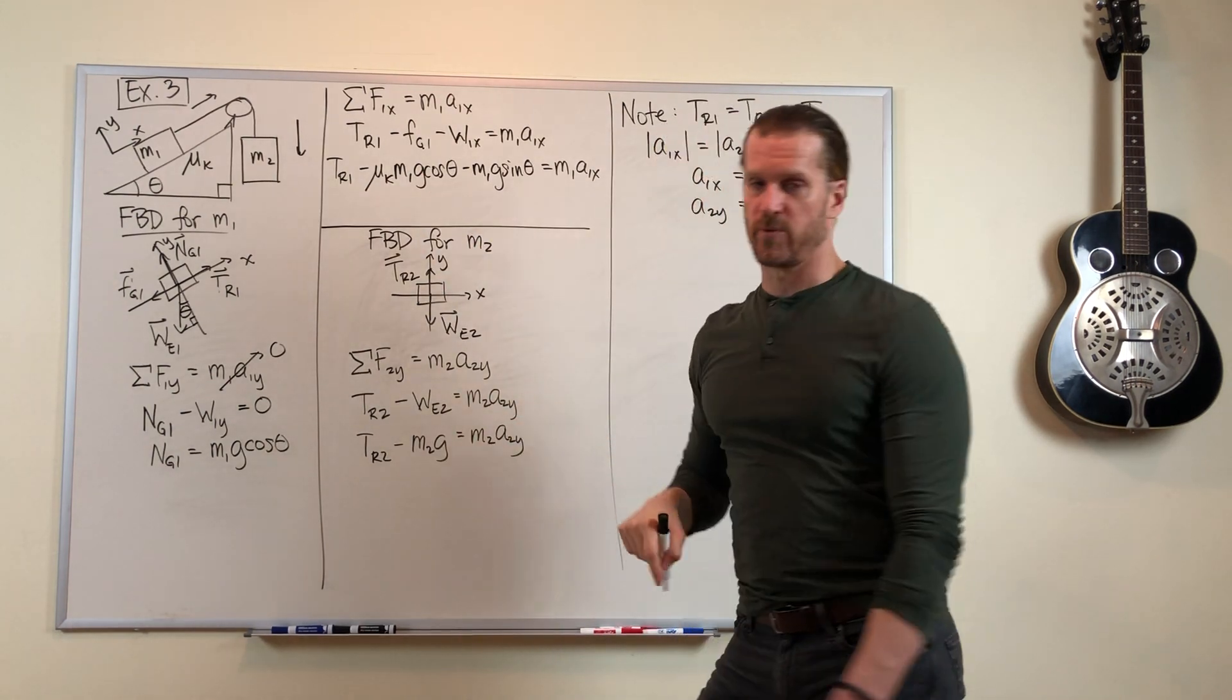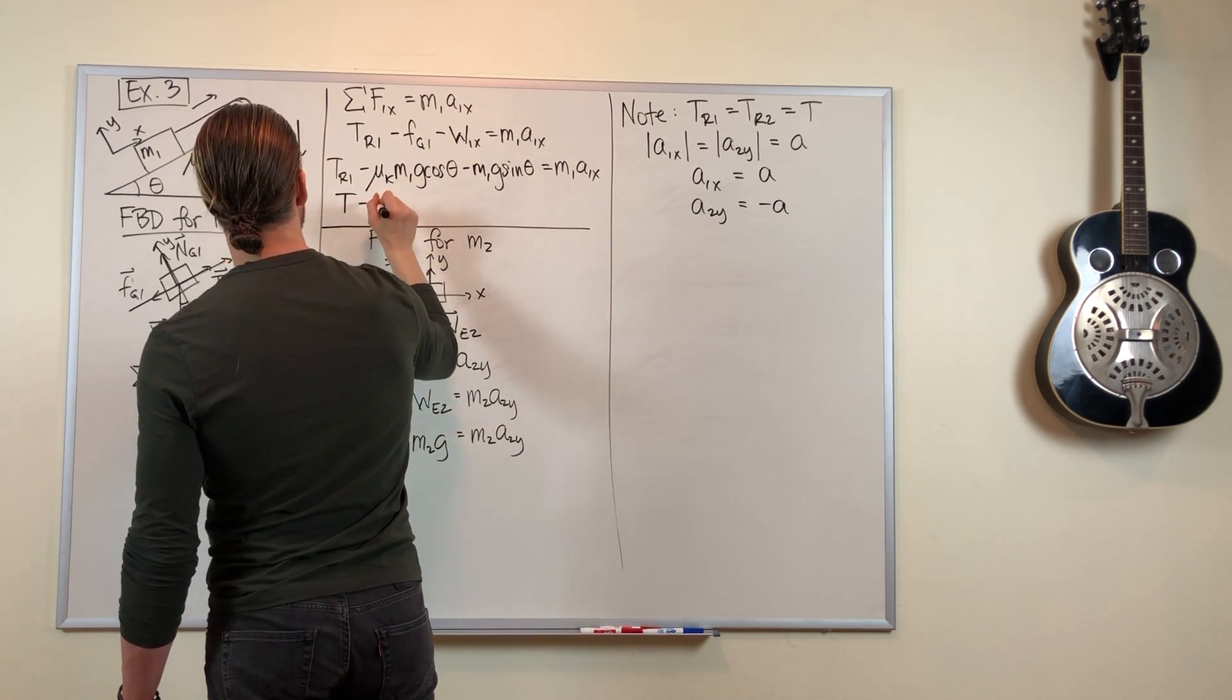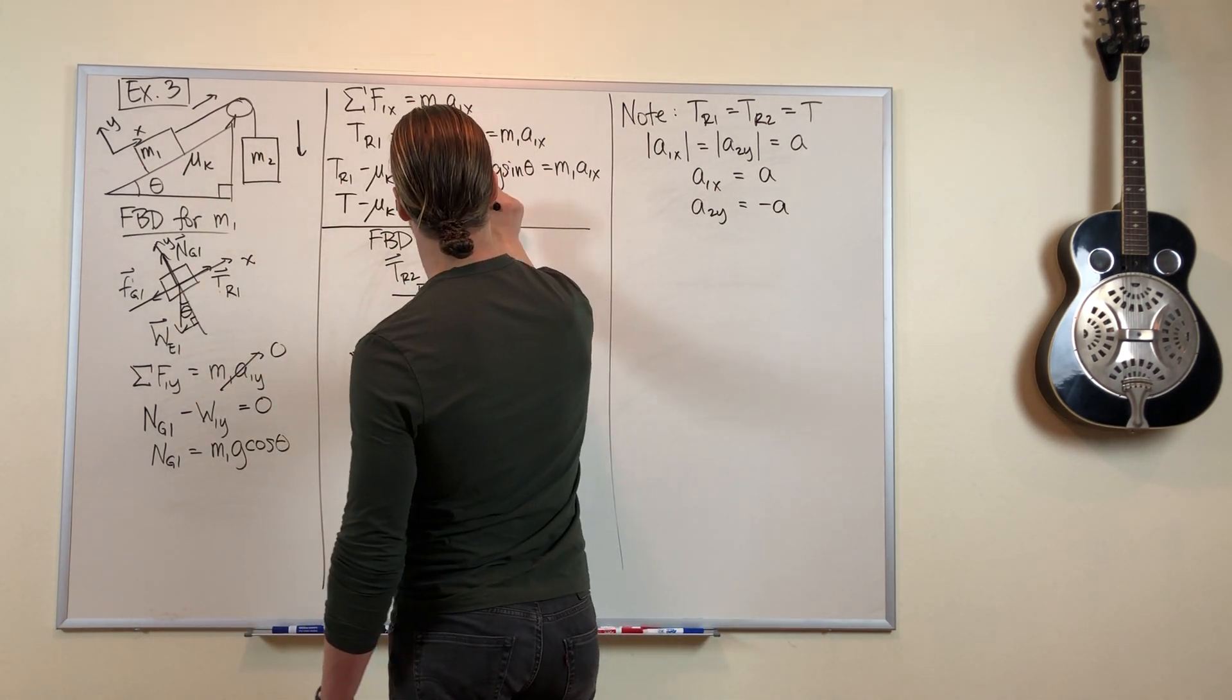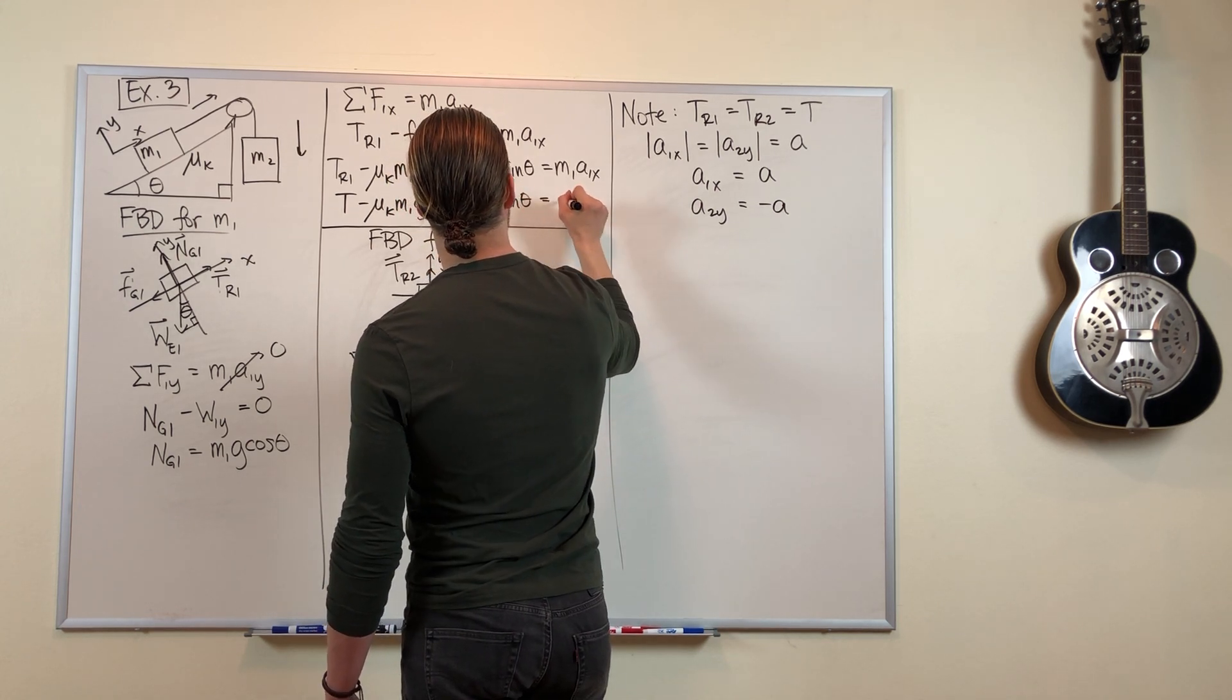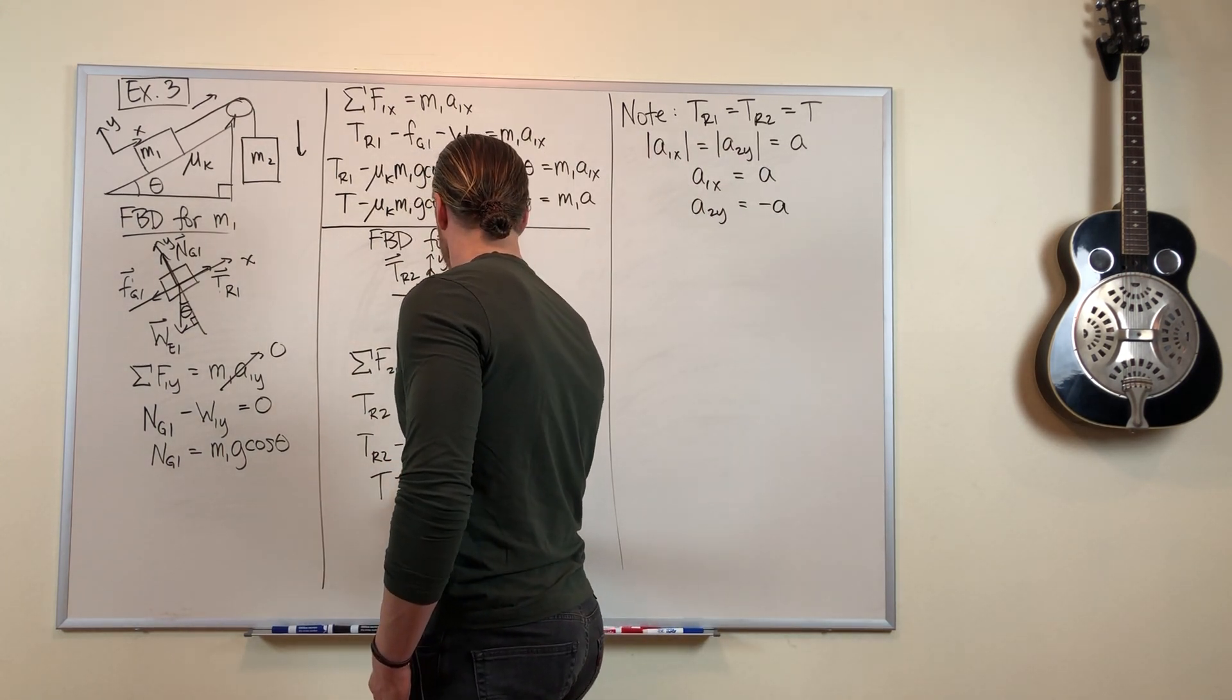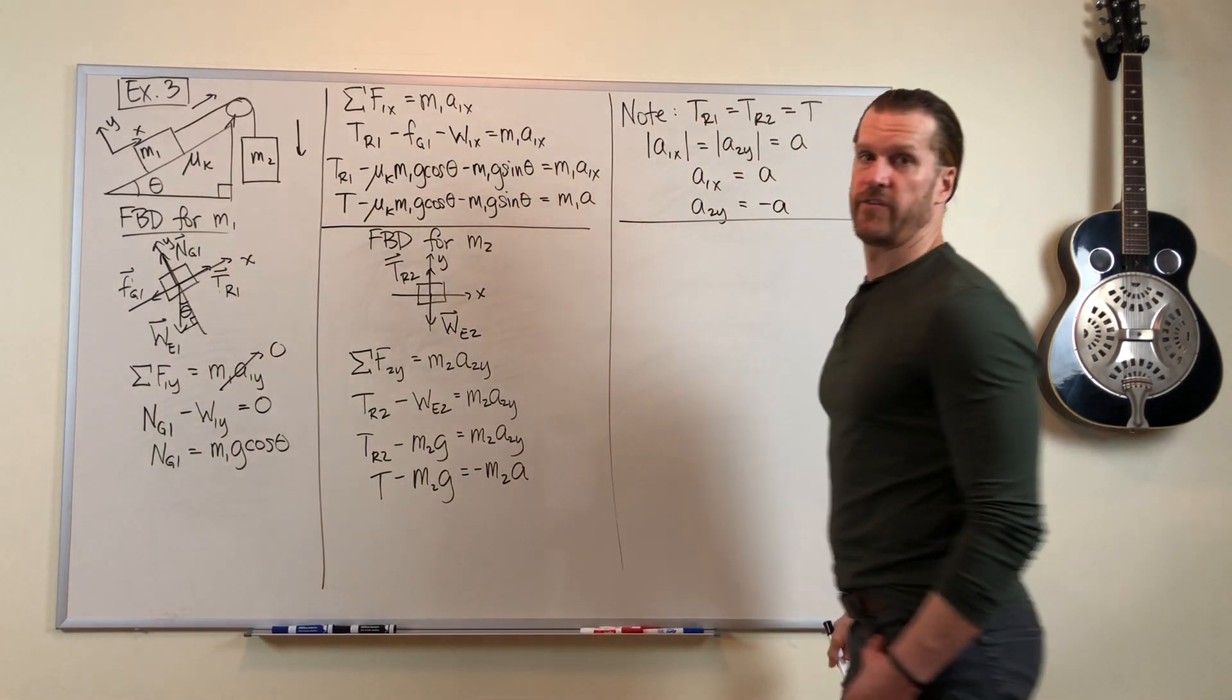So now let's go back to our two equations where we're stuck and substitute in those values we just figured out. There's T, and there's all this stuff. That was the friction force. This was the x component of the gravity force, and then that equals m1a. And over here we've got T minus m2g equals negative m2a. Alright, so we've got a system of equations that we need to solve now.